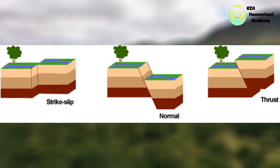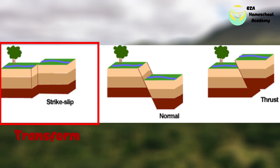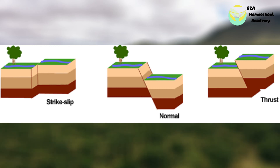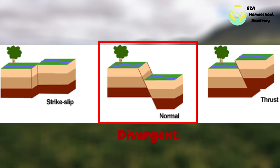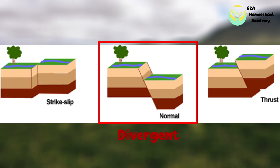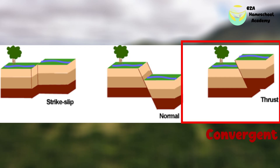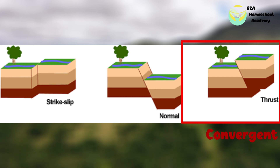The tectonic plates move in three main ways during an earthquake. In some cases, called a transform or strike-and-slip method, the tectonic plates slide past each other. In other cases, we find divergent or normal movement, where the tectonic plates pull away from each other and new crust is formed along the fault line. The tectonic plates also converge — in this form they move towards each other, forming high mountain peaks.